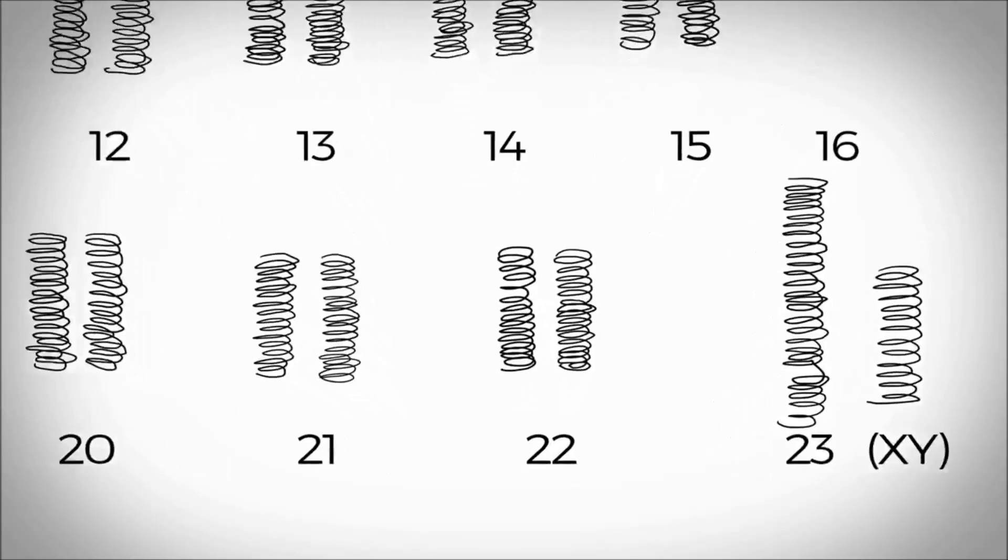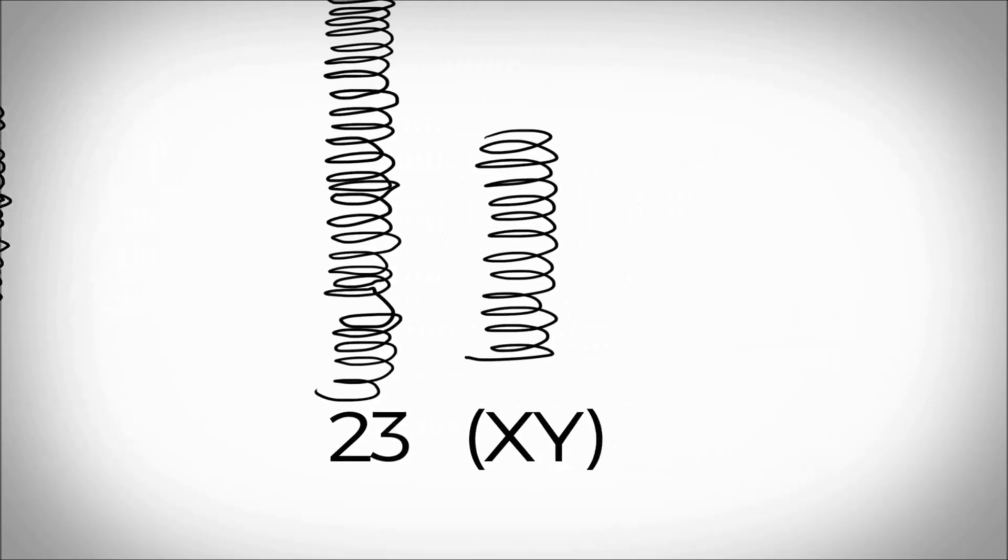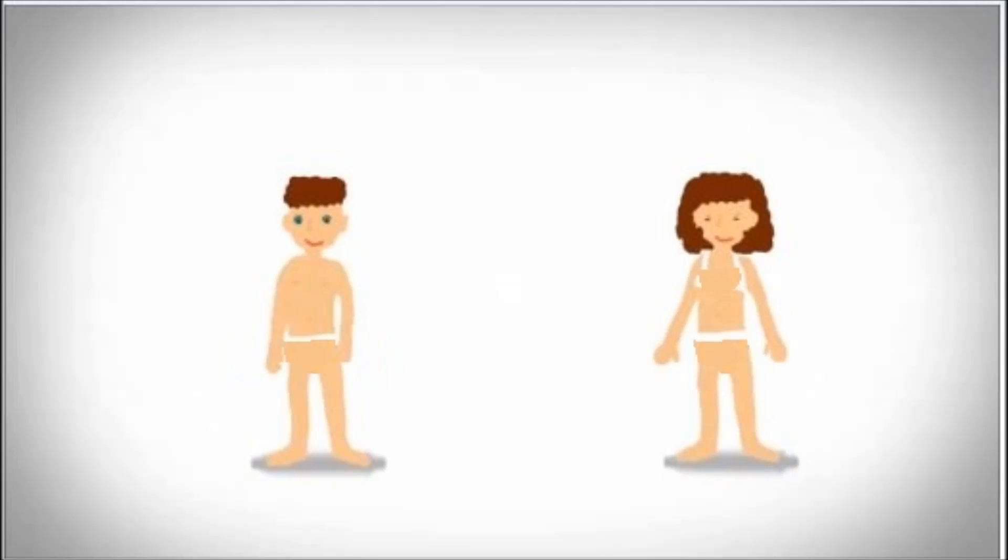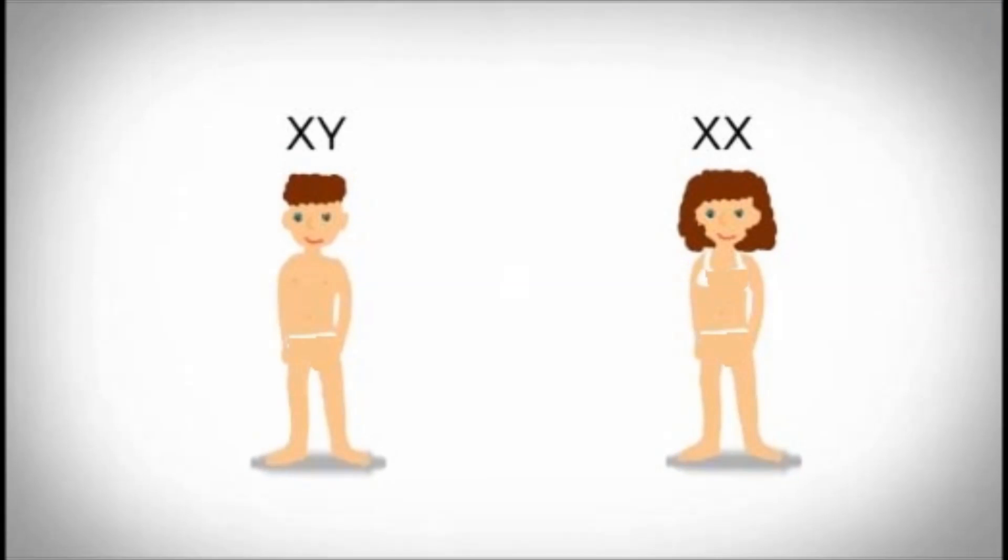Twenty-two of these pairs, called autosomes, look the same in both males and females. The 23rd pair, the sex chromosomes, differ between males and females. Females have two copies of the X chromosome, while males have one X and one Y chromosome.